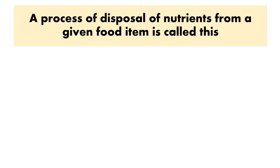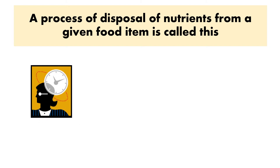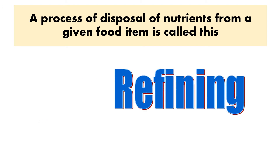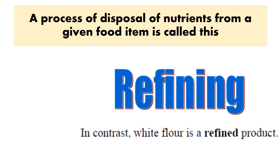The process of disposal of nutrients from a given food item is called refining — this is mainly referring to grains, but not only. In contrast, white flour is a refined product because part of what's originally in the grain kernel is removed, or disposed of.